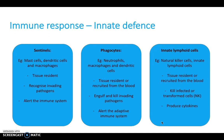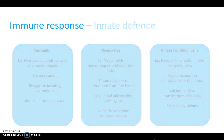We also have innate lymphoid cells such as natural killer cells. These are resident in the tissues and kill infected or transformed cells — for example, self-cells that are now non-self because they've changed. They also produce cytokines.